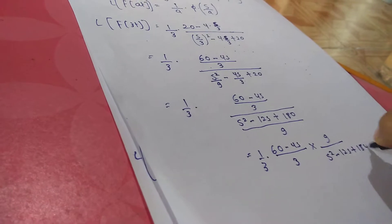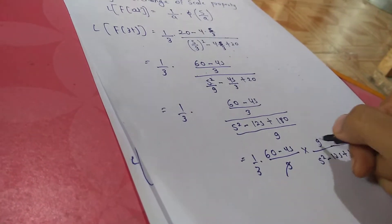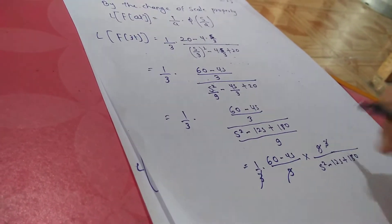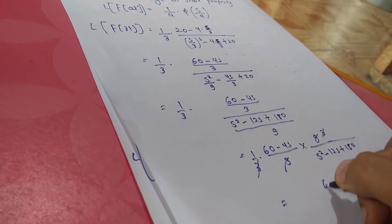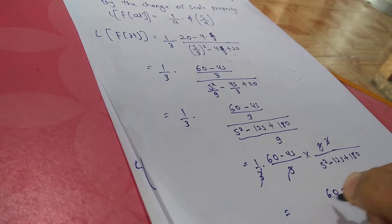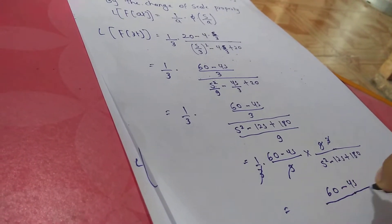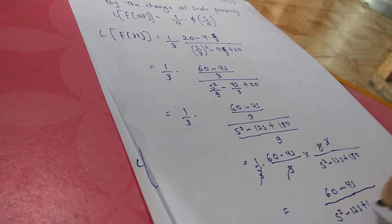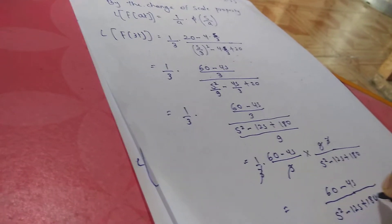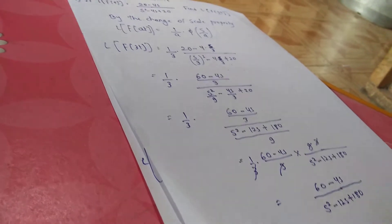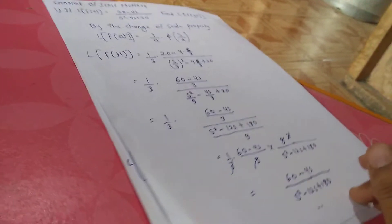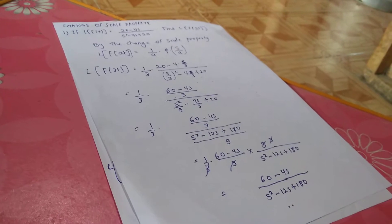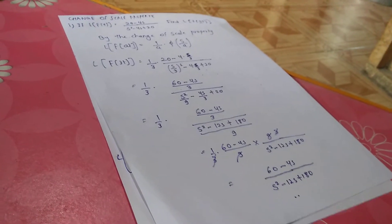The 3 and 3 cancel, giving 9. This cancels, and the final answer is (60 minus 4s) over (s² minus 12s + 180). That's the final answer. Thank you so much for watching guys, I hope you have understood.